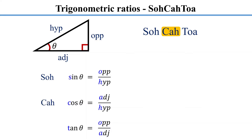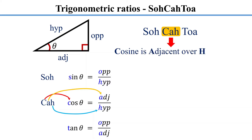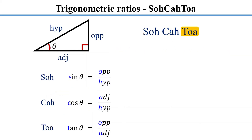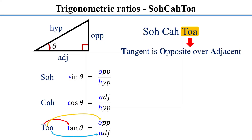The second three letters of SOHCAHTOA represent the cosine ratio. C is for cosine, A is for adjacent, and H is for hypotenuse — cosine is adjacent over hypotenuse. The last three letters represent the tangent ratio. T is for tangent, O is for opposite, and A is for adjacent — tangent is opposite over adjacent.